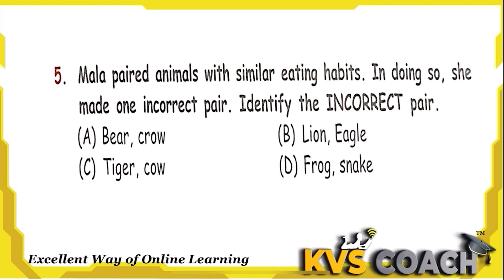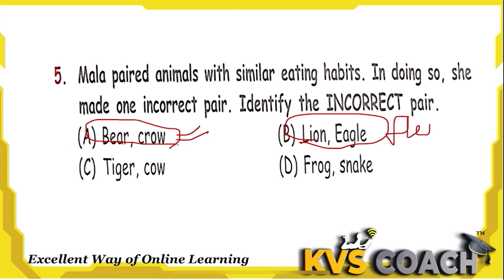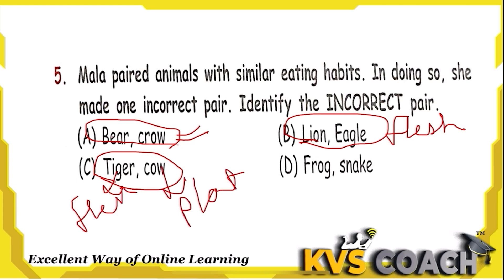Question 5: Mala paired animals with similar eating habits but made one incorrect pair. Bear and crow — both eat plants and animals, correct. Lion and eagle — both are flesh eaters, correct. Tiger and cow — tiger is a flesh eater and cow is a plant eater, so this pair is wrong. Frog and snake — both are flesh eaters, correct. Option C (tiger and cow) is the right answer.